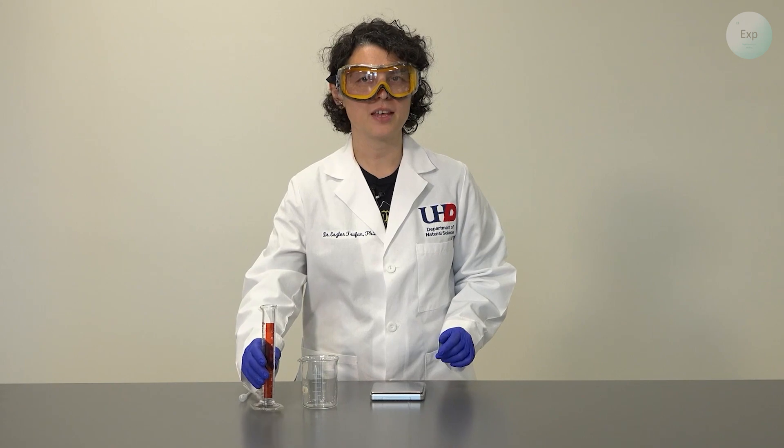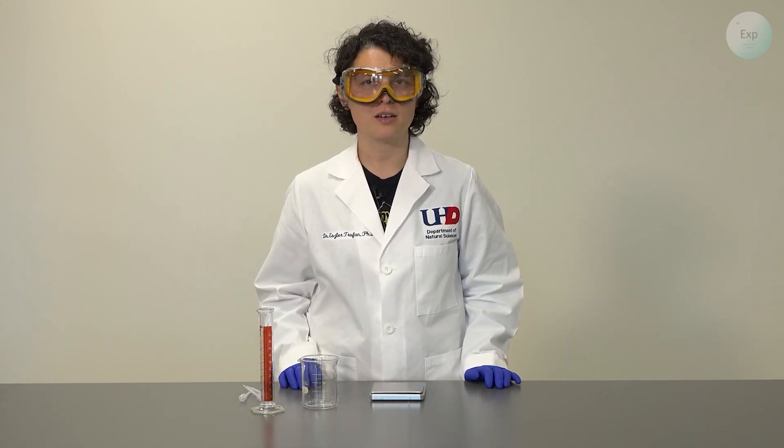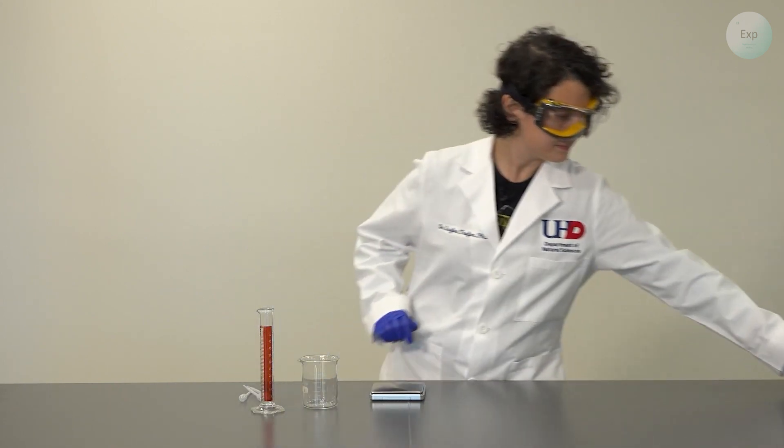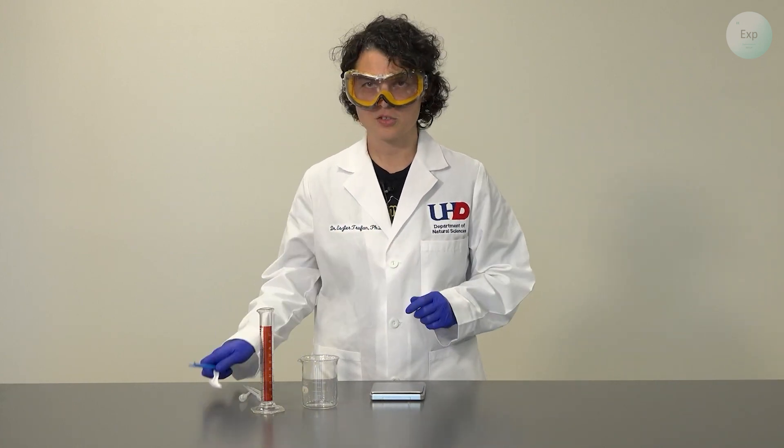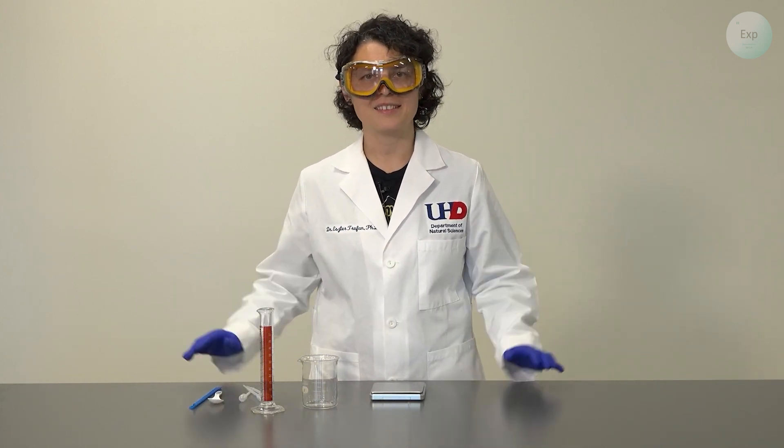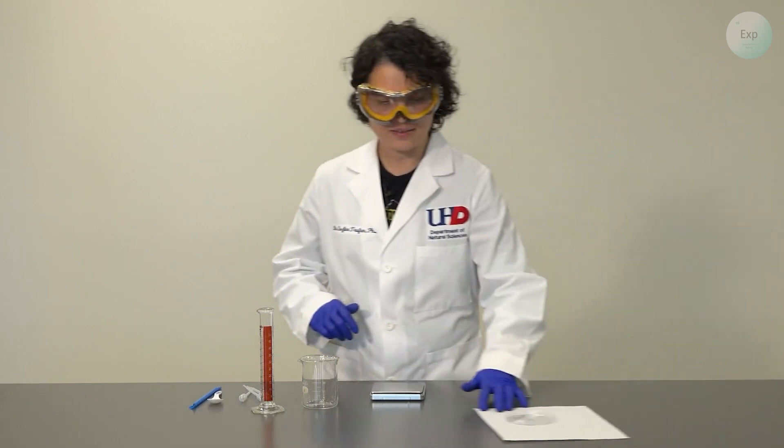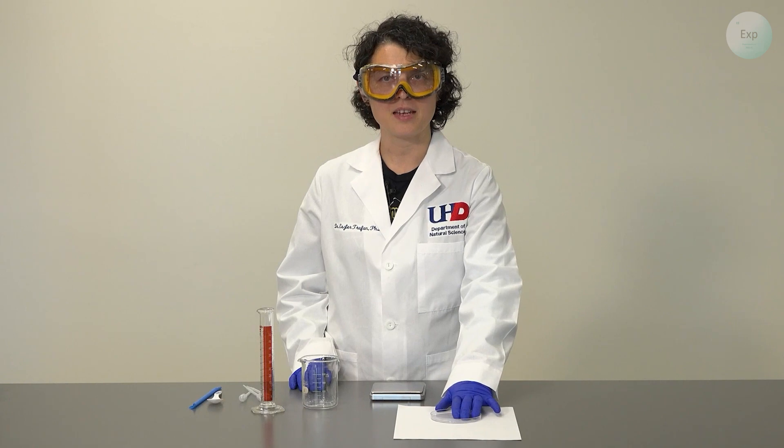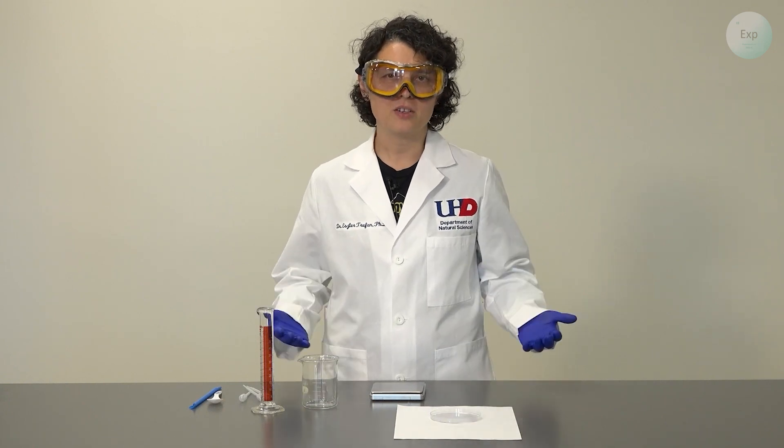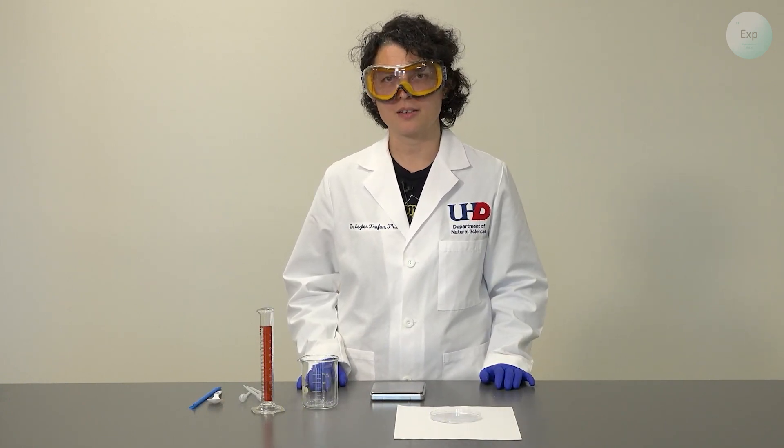We'll use a graduated cylinder to get approximately 50 milliliters of the indicator solution. We'll need a spatula or a spoon to transfer our solid state indicator, and then I'm going to use a piece of white paper with a petri dish on top of it, but you can also use a white plate and that will work just fine.